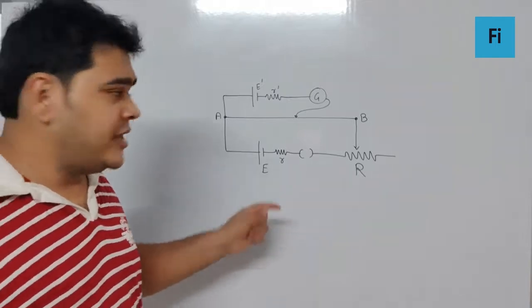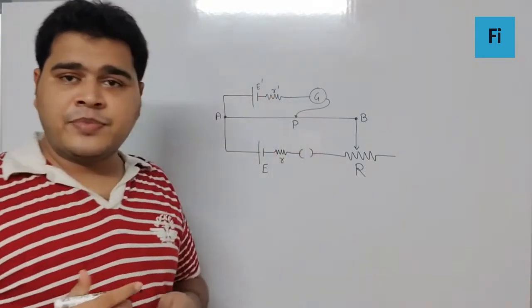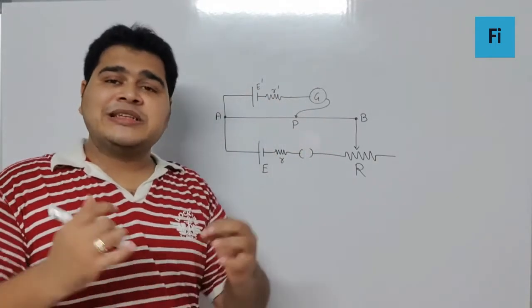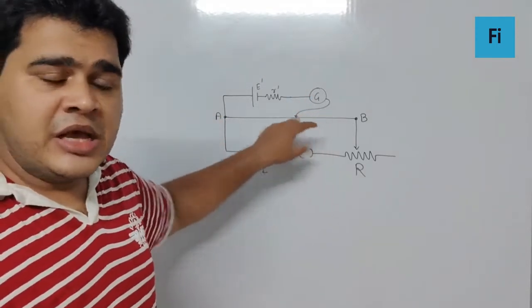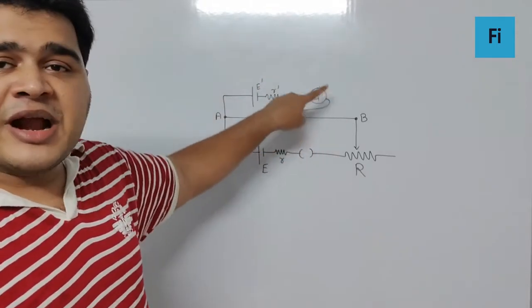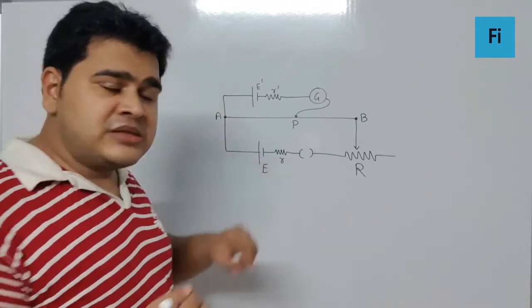You get the balance point, say P, over here, which means there is no current flowing through the galvanometer. This means no current is flowing through this branch, and that means even if you connect a resistance over here...